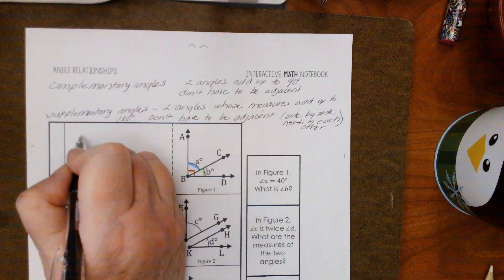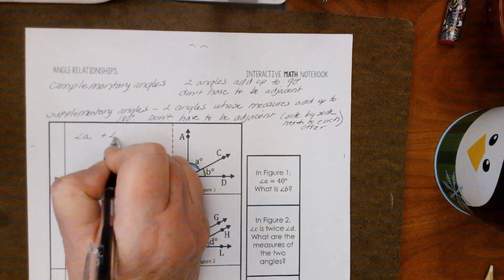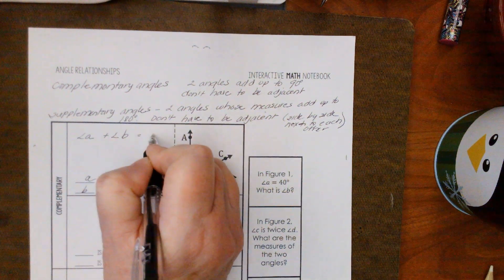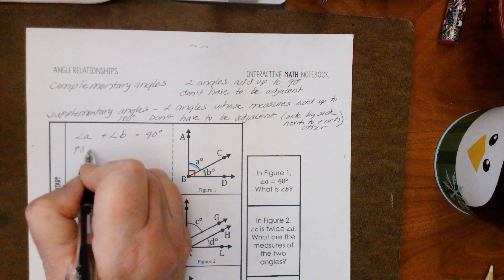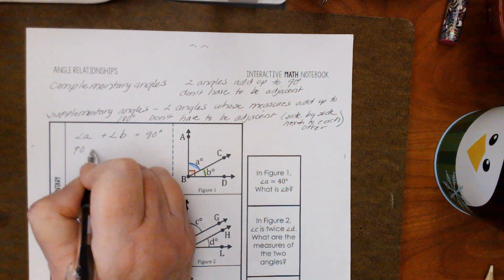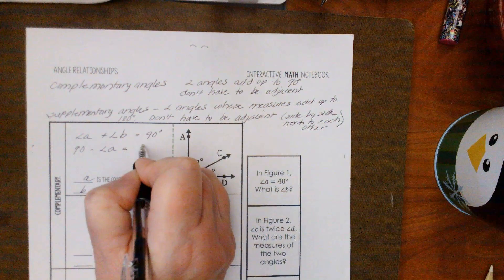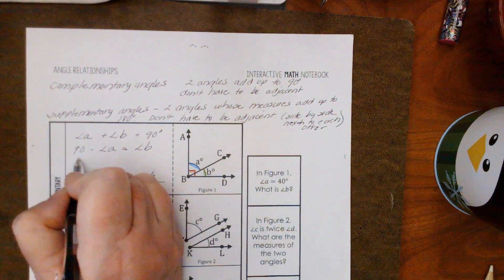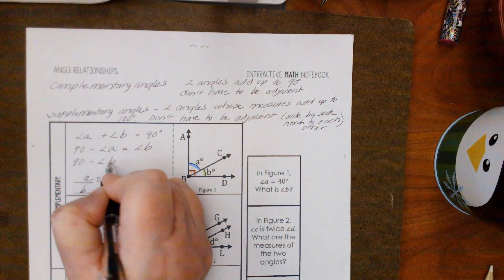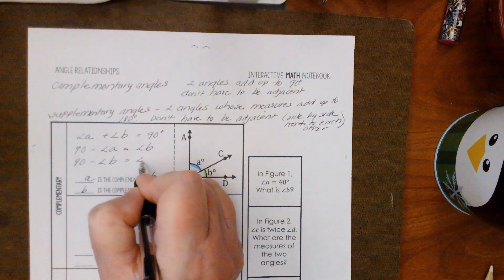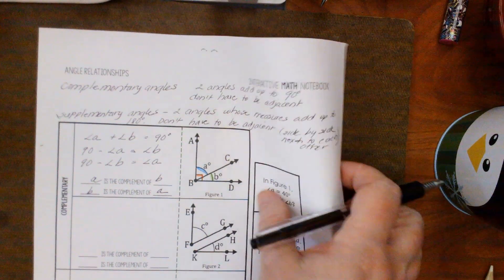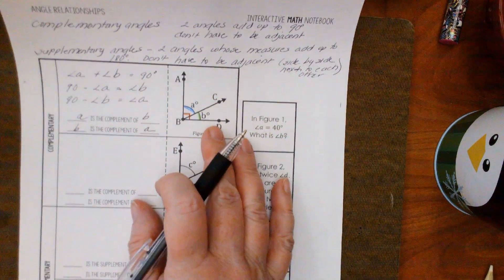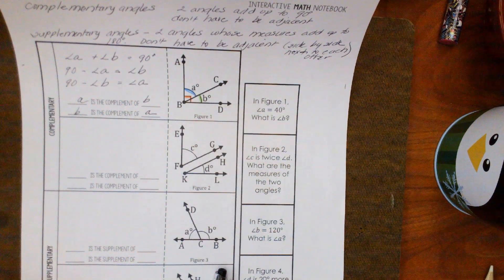We know that angle A plus angle B equals 90 degrees, so if we subtract — 90 minus angle A — it will be angle B, and if you take 90 minus angle B, it will be angle A. And so we're going to look at the complementary angles here, and we can see that they're not adjacent.